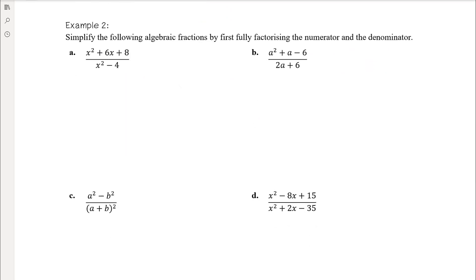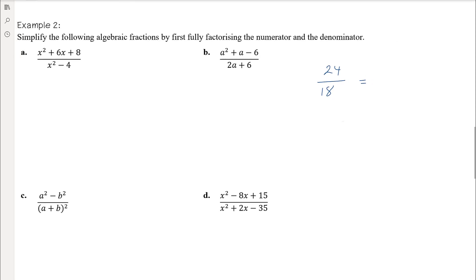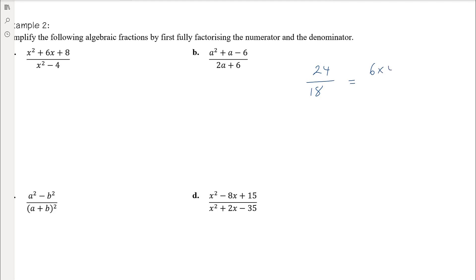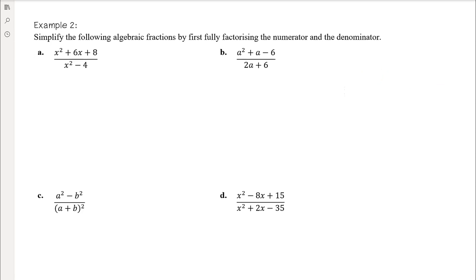Now we look at simplifying algebraic fractions by first fully factorising the numerator and denominator. The key when simplifying fractions is to look for common factors so you can divide both numerator and denominator by them — that's what cancelling means. The only way to identify common factors is to fully factorise first. It's like simplifying 24 over 18: 6 is common, 24 = 6 × 4 and 18 = 6 × 3, so it simplifies to 4 thirds.